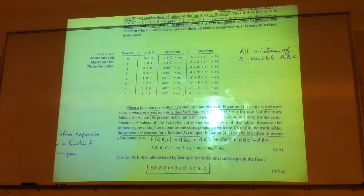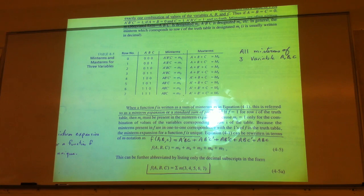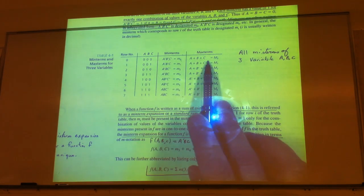Are you talking about the truth table? For example, the first line is a-prime, b-prime, c-prime, which means the values of a, b, c are 0, 0, 0. So that means we assume a, b, c are all equal to 1 when they appear uncomplemented. And for max terms, we assume the values of a, b, and c are 0, so 0, 0, 0 gives 0.